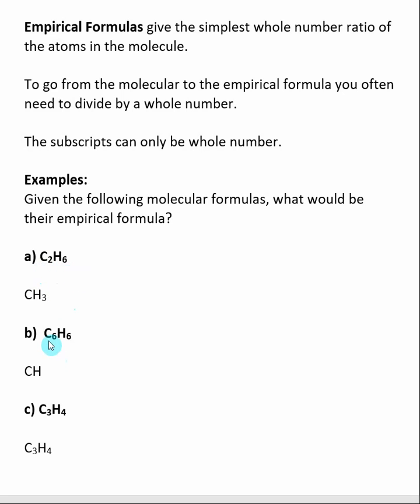For the next one, C6H6, it is a 1 to 1 mole ratio. So for every 1 carbon, we have 1 hydrogen, so the empirical formula for this molecular formula would be CH. So we've divided the molecular formula by 6.